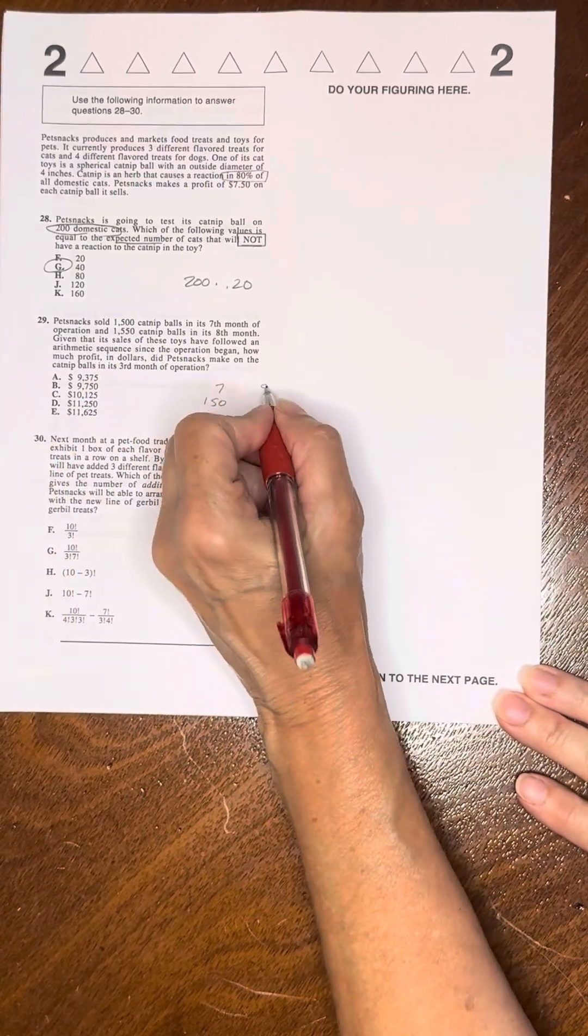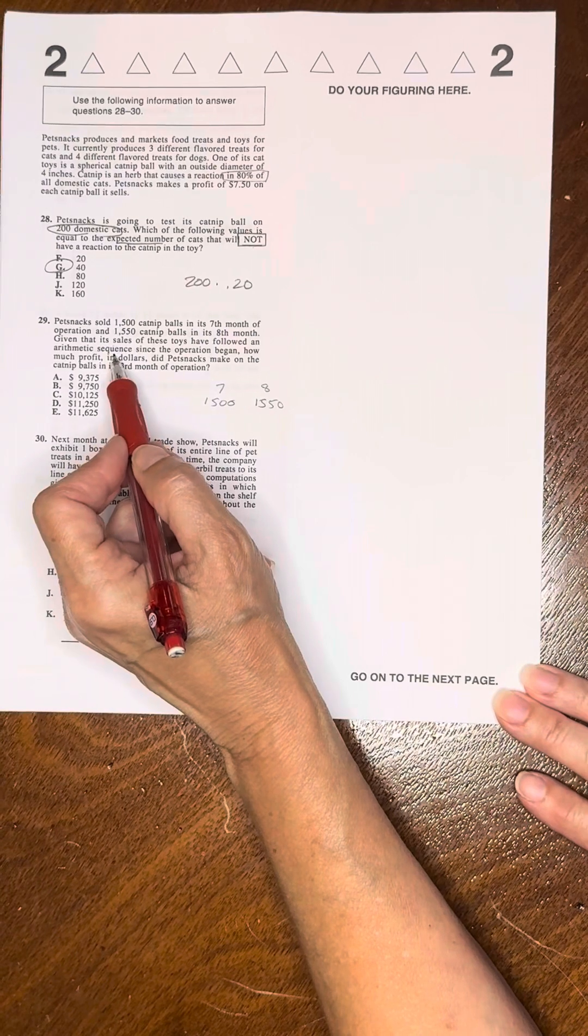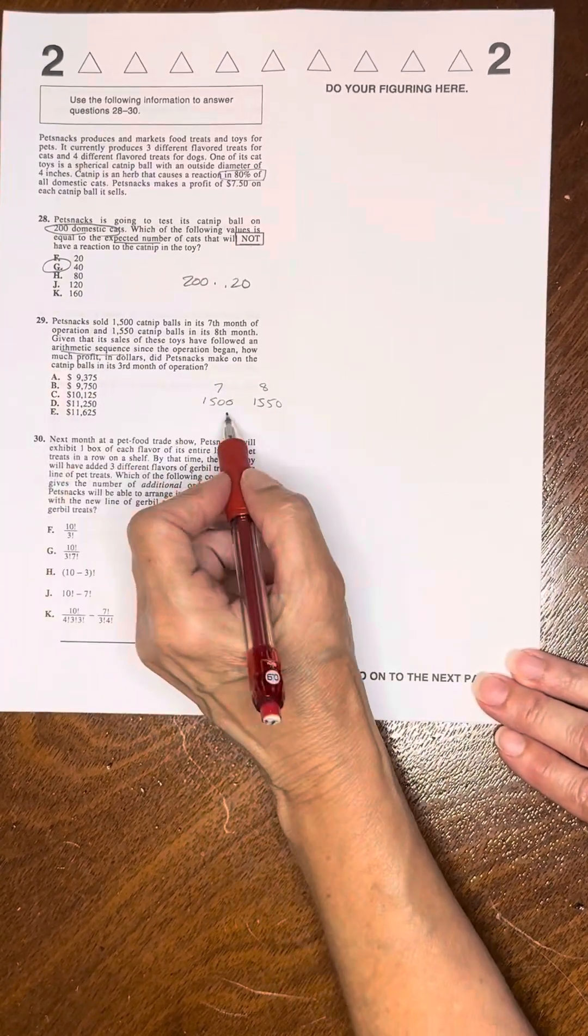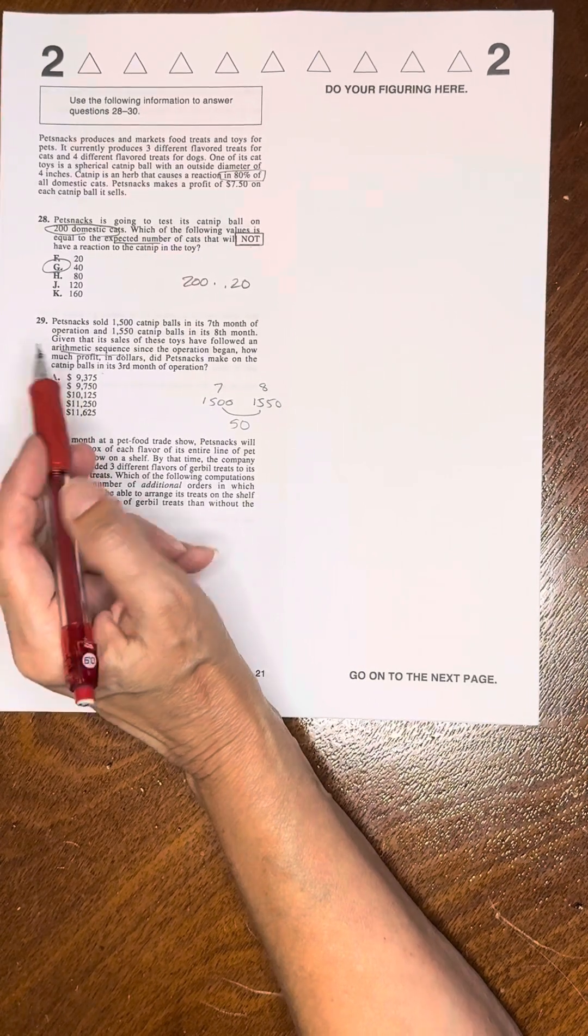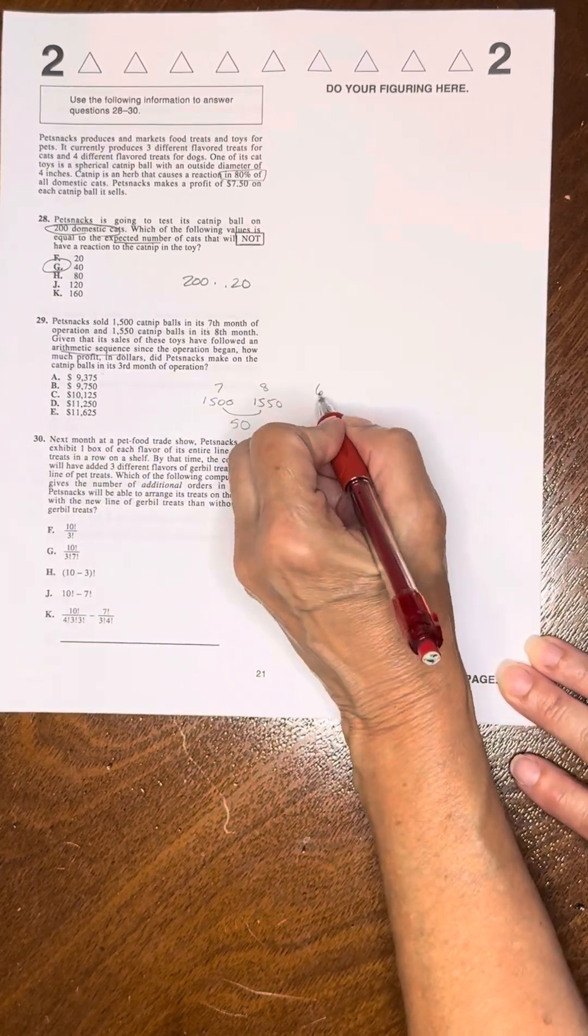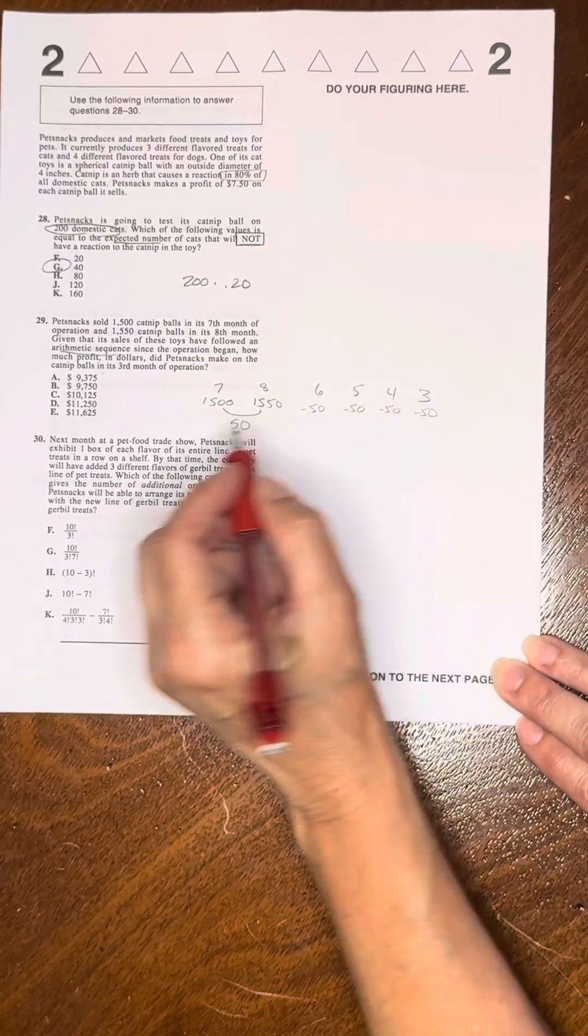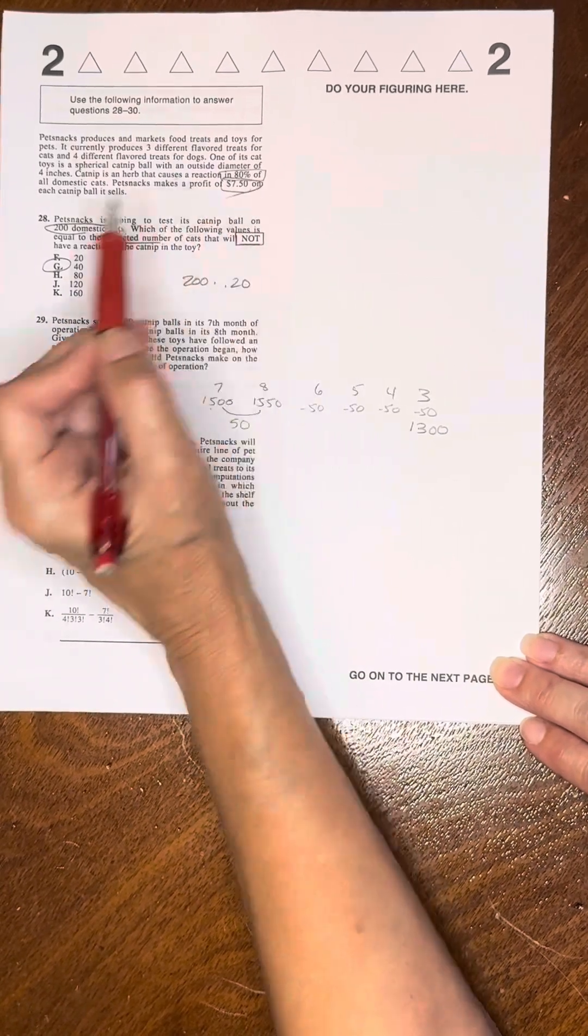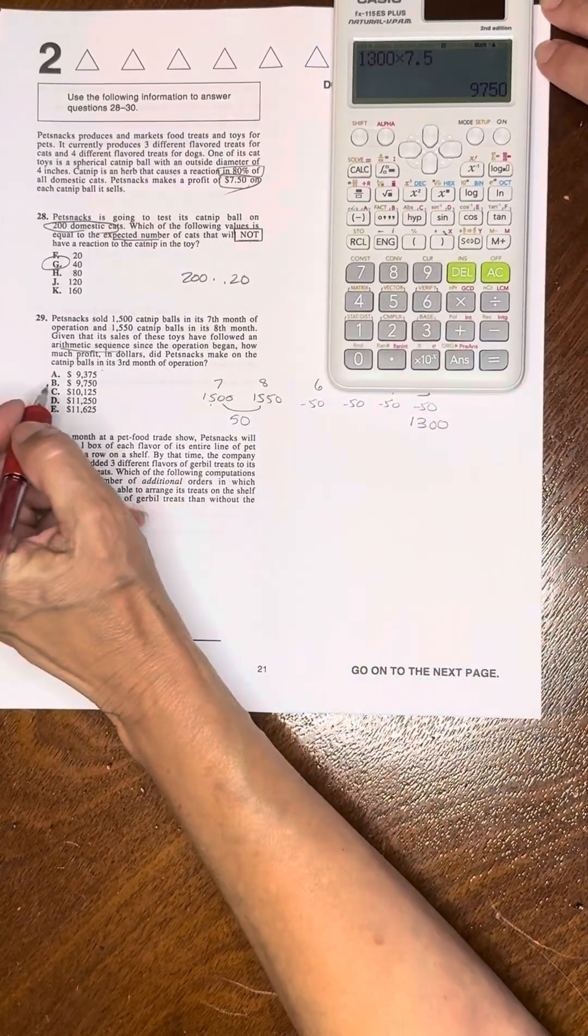Problem 29: Pet Snack sold 1500 catnip balls in the seventh month, and 1550 in the eighth month. Given that sales have followed an arithmetic sequence, arithmetic means we're adding the same number every month. So we're adding 50 additional catnip balls every month. How much profit did she make in the third month? You have to go backwards. So the seventh month, go backwards 6, 5, 4, 3. So it's minus 50, minus 50, minus 50, and minus 50. So it's minus 200. So it's 1,300 is how many she sold. She makes a profit of $0.75, so you take the 1,300 times 0.75 is $975. The solution is B.